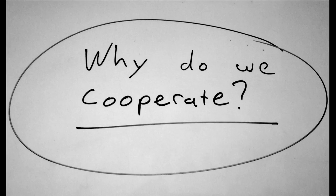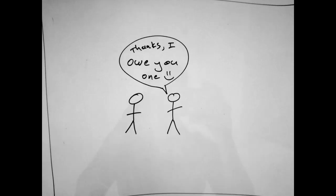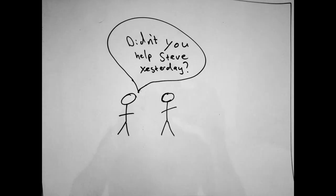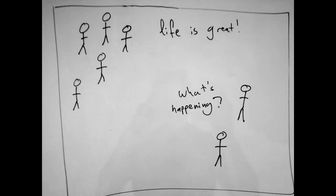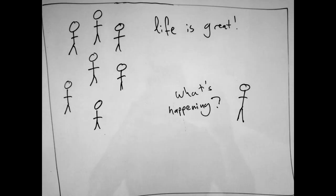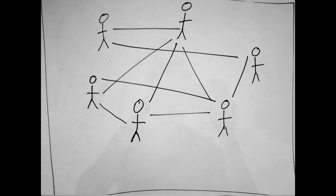Five answers to the question of cooperation are that we cooperate with people we are related to. We cooperate with people who have cooperated with us in the past. We cooperate with people who we know have cooperated with others in the past. We cooperate because it provides a benefit to our group. And lastly, we cooperate because of the network that we are a part of.